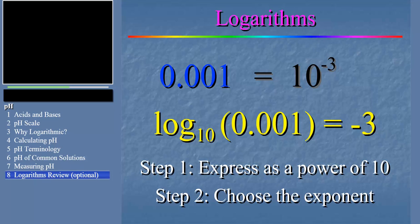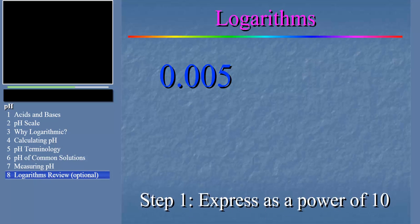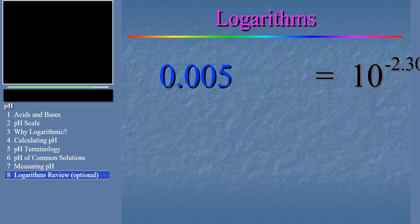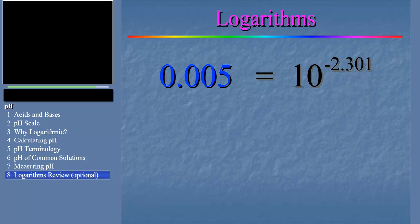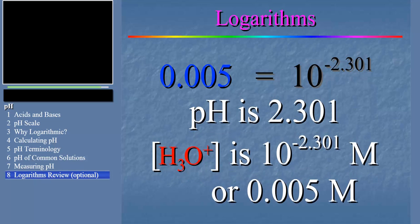Now for something a little harder: what would be the logarithm of 0.005? I can't do that in my head, so I'll use my calculator. I enter 0.005 and hit the log function key, and out comes minus 2.301. That really is the log of 0.005, meaning 0.005 can be written as 10 to the minus 2.301. So if the pH of a solution is 2.301, the hydronium ion concentration is 10 to the minus 2.301 molar, or in other words, 0.005 molar.